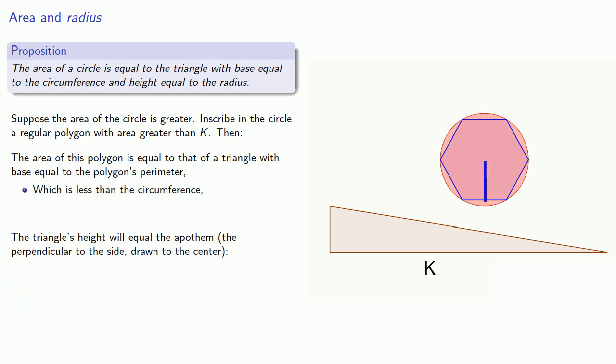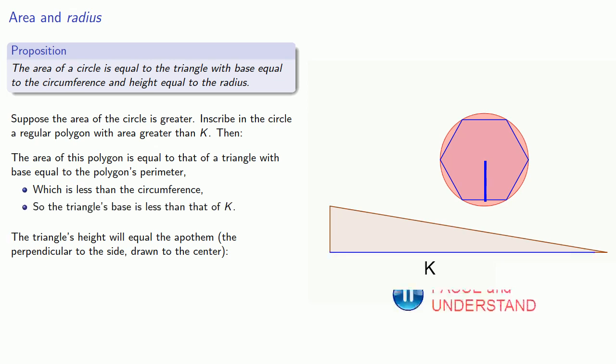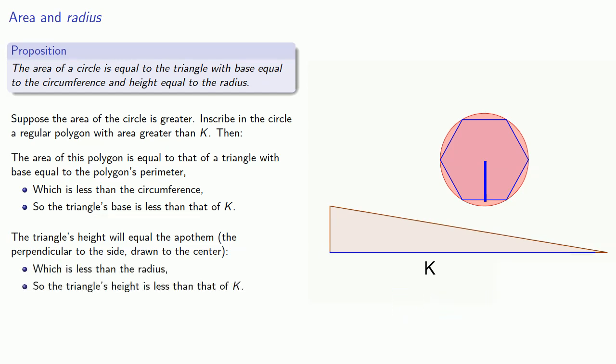But the perimeter is less than the circumference, so the triangle's base will be less than that of K. Meanwhile, the apothem is less than the radius, and so the triangle's height is less than that of K. And so the polygon has the area of a triangle that is shorter and narrower.